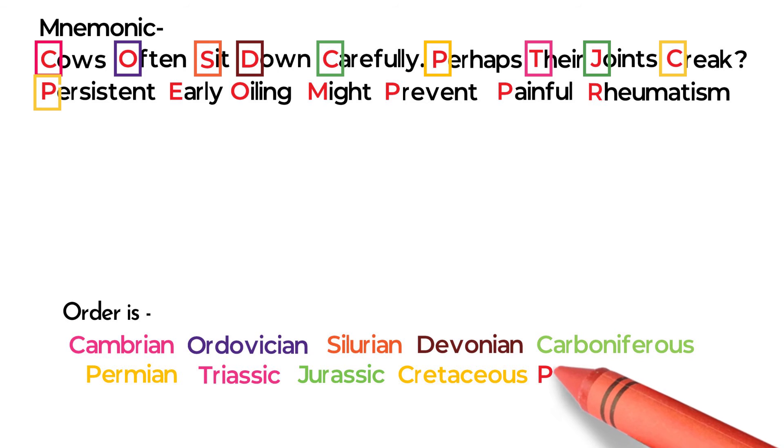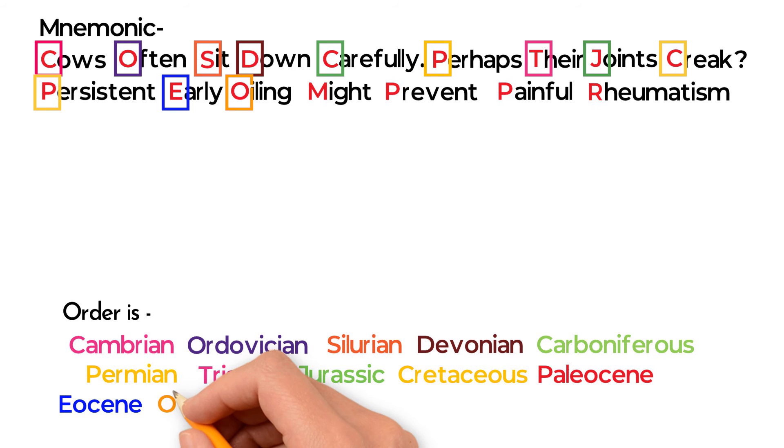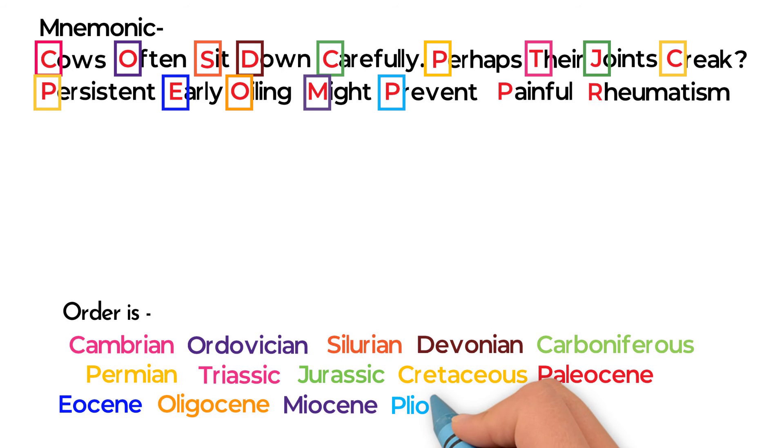P in Persistent for Paleocene, E in Early for Eocene, O in Oiling for Oligocene, M in Might for Miocene, P in Prevent for Pliocene.